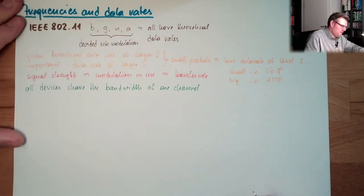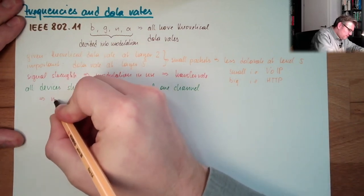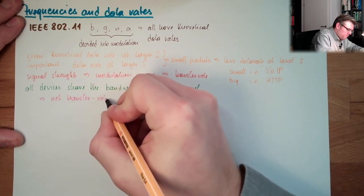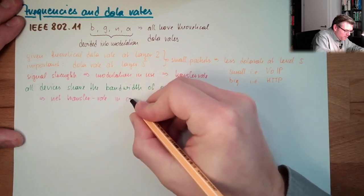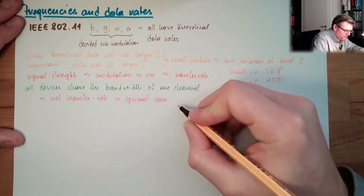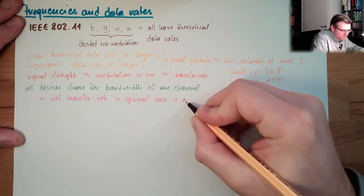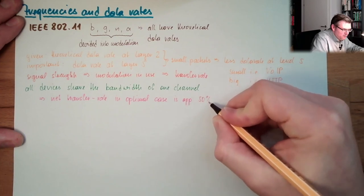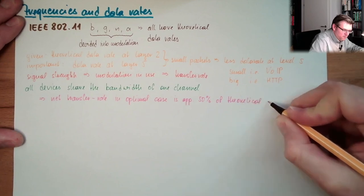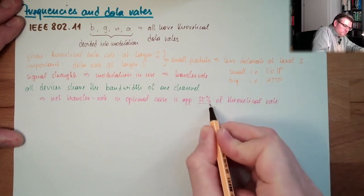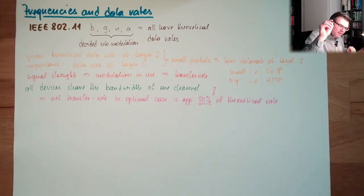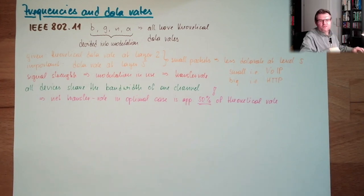Even if we have optimum, even if everything is perfect, we have not as much bandwidth as the theoretical bandwidth. The net transfer rate in optimal case is approximately 50 percent of theoretical.